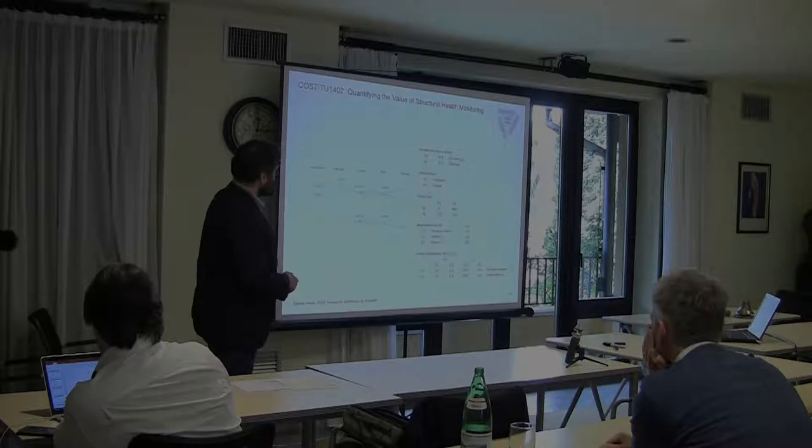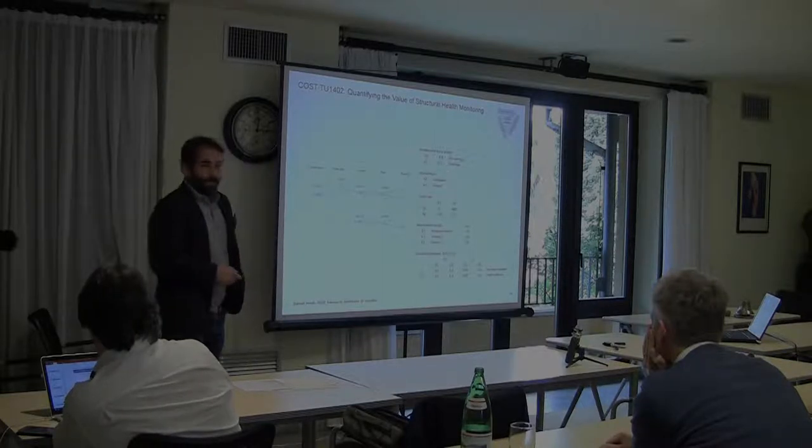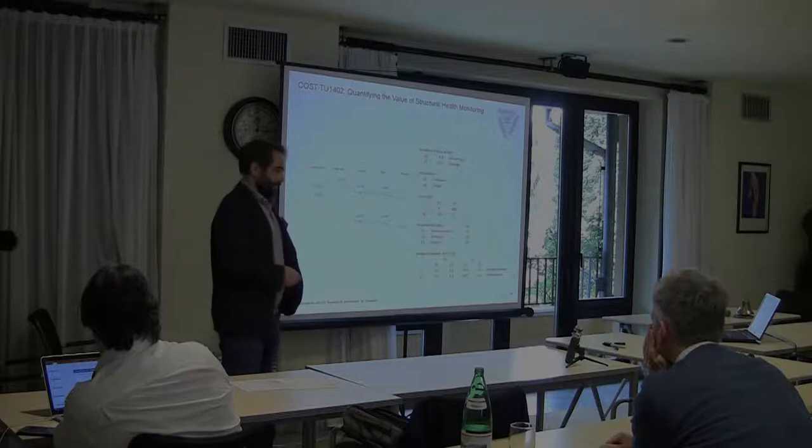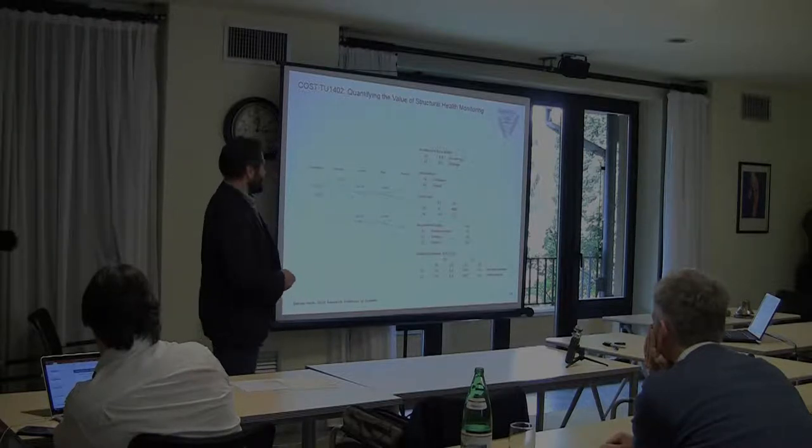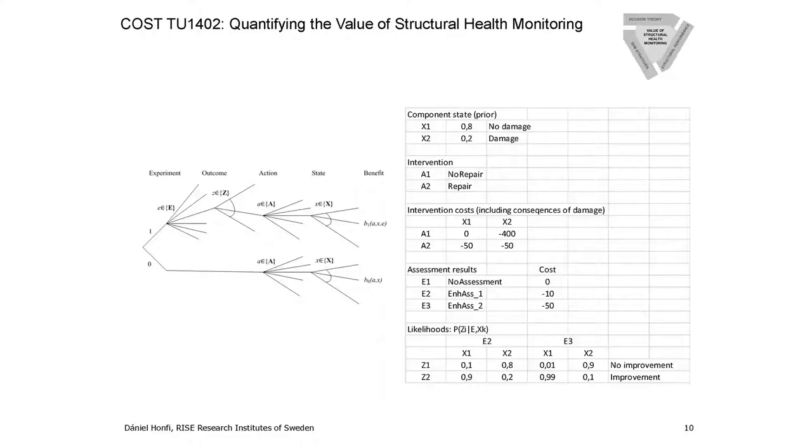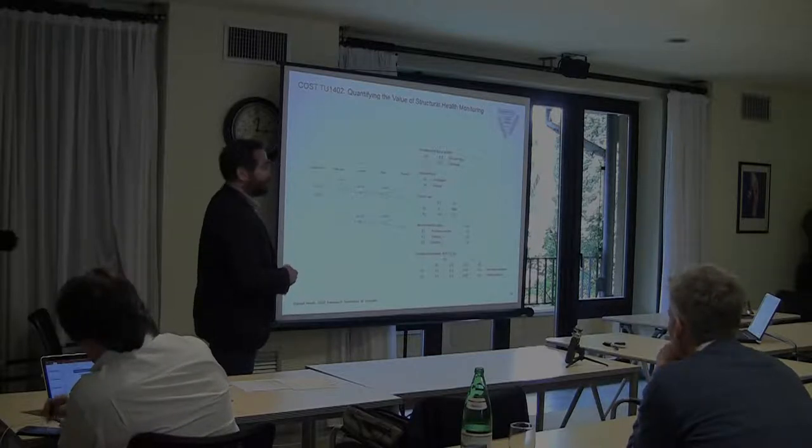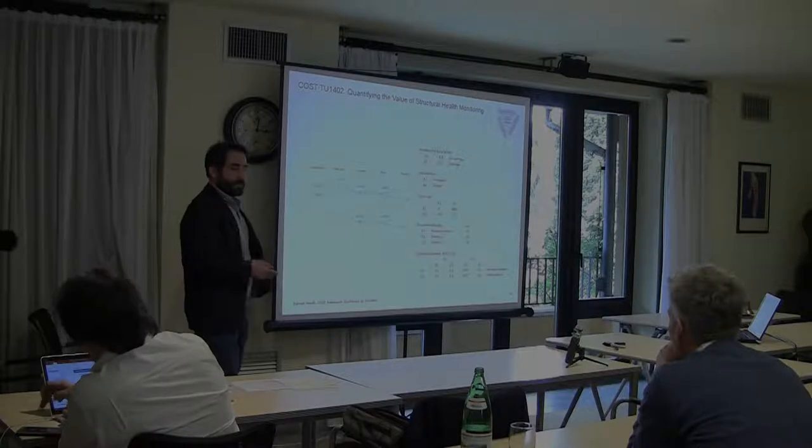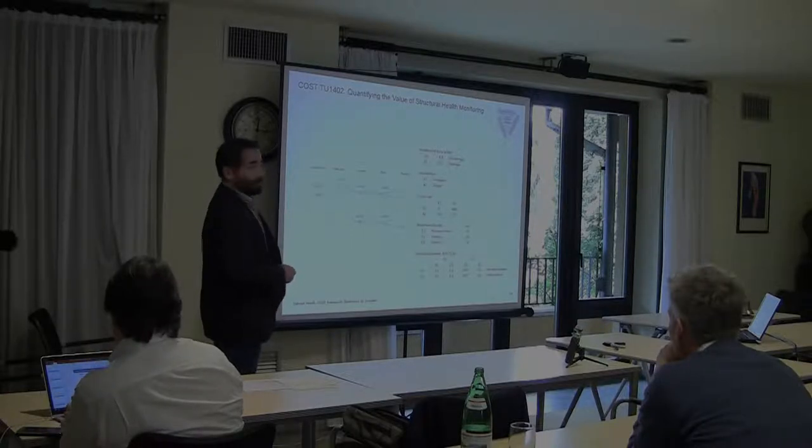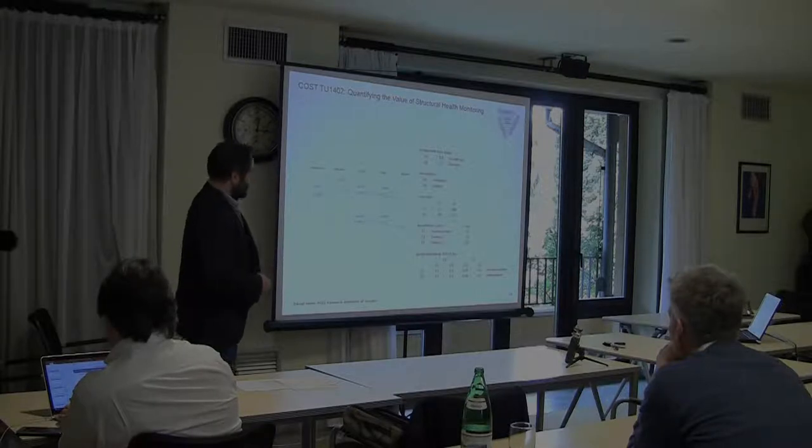Yesterday we heard about different software tools. There's a very efficient software tool called Excel, pen and paper, and I think you can understand a lot. So we tried to simplify the problem. The state of nature here in this case was: there is damage or no damage in this detail, and we had some prior probabilities based on previous assessment from visual inspection.